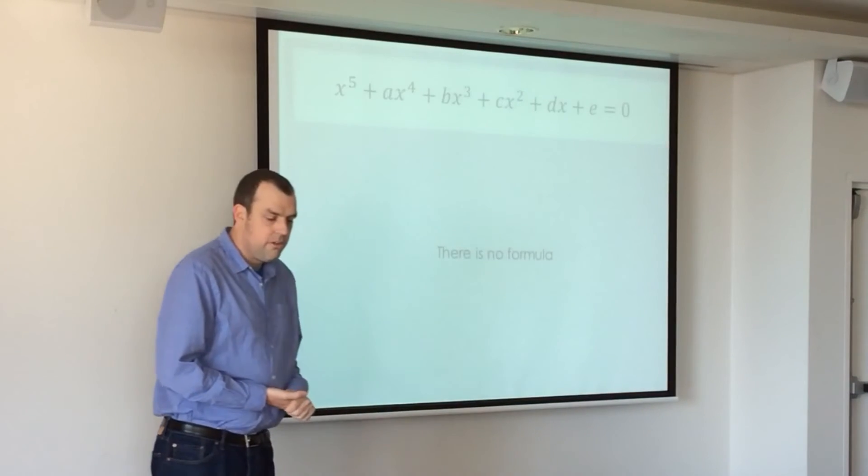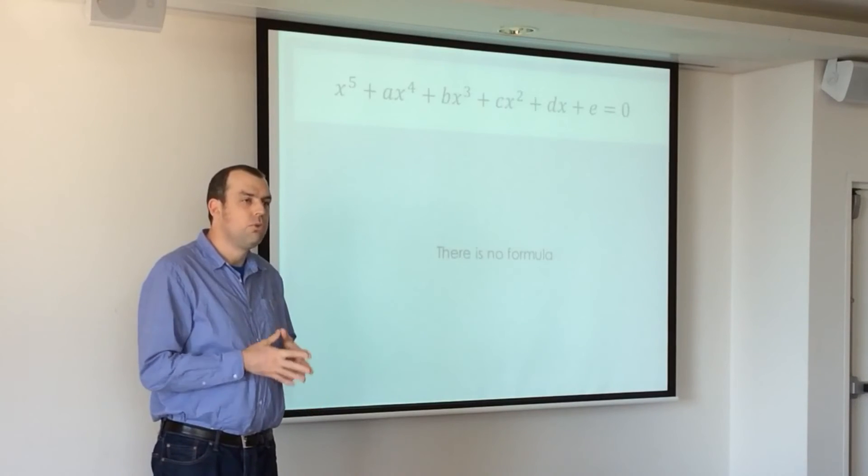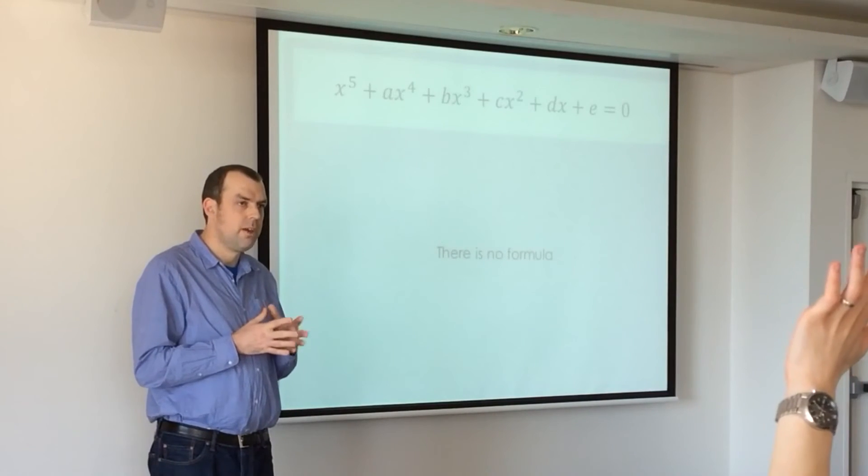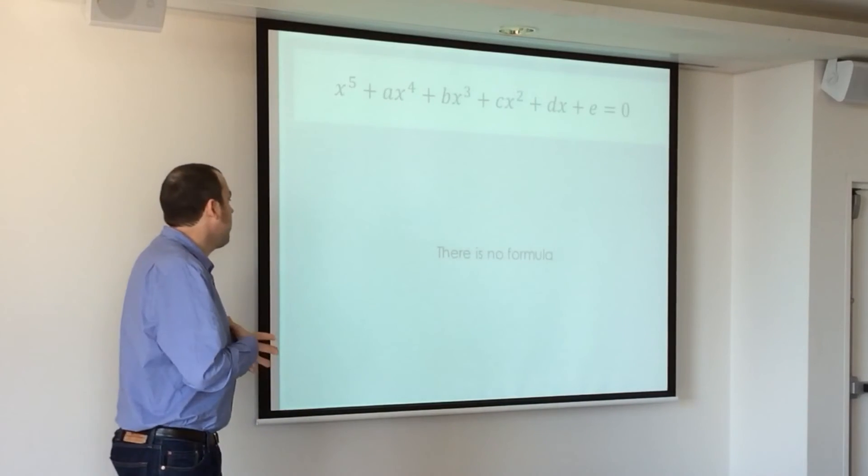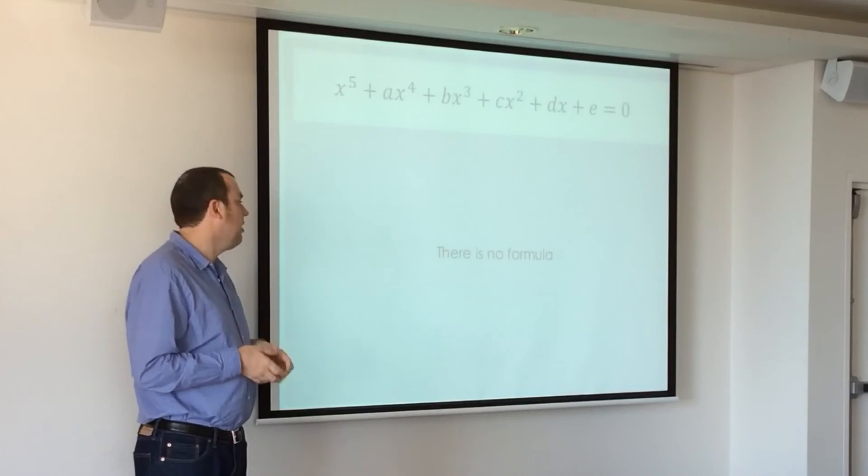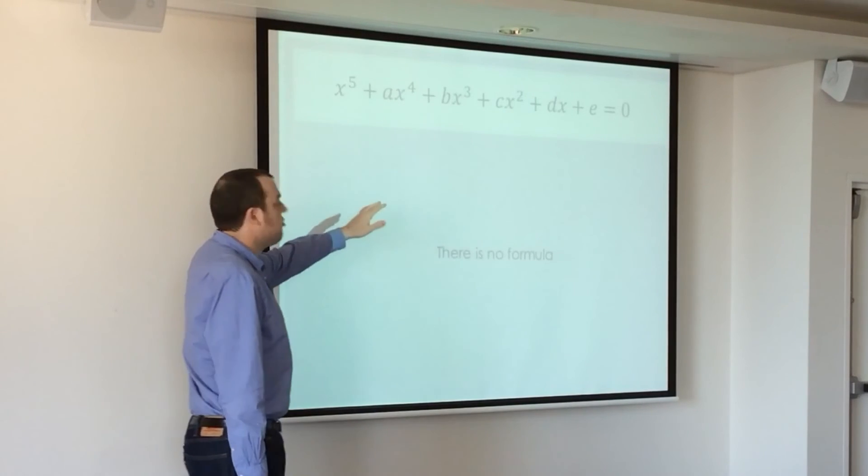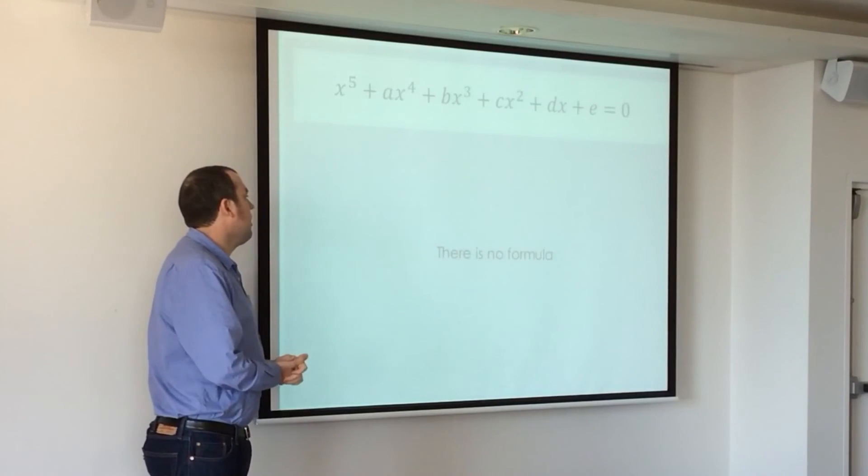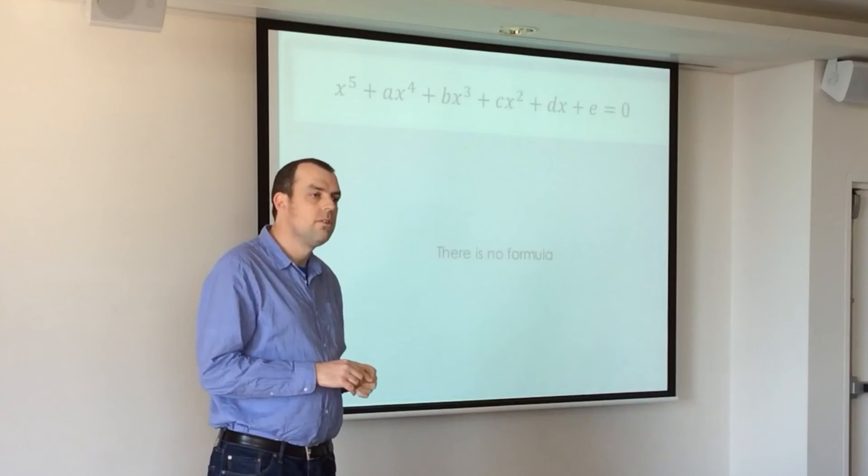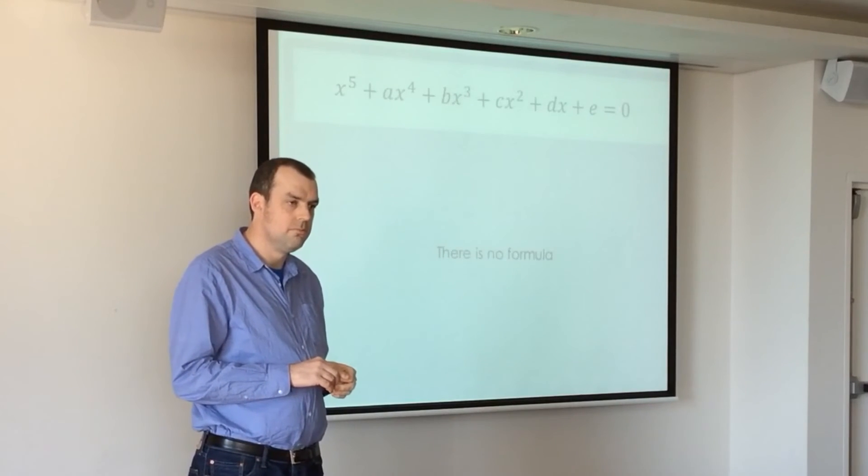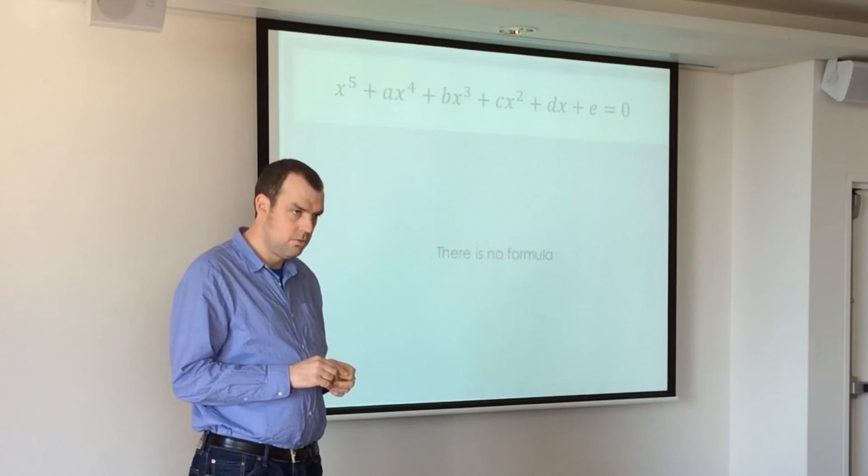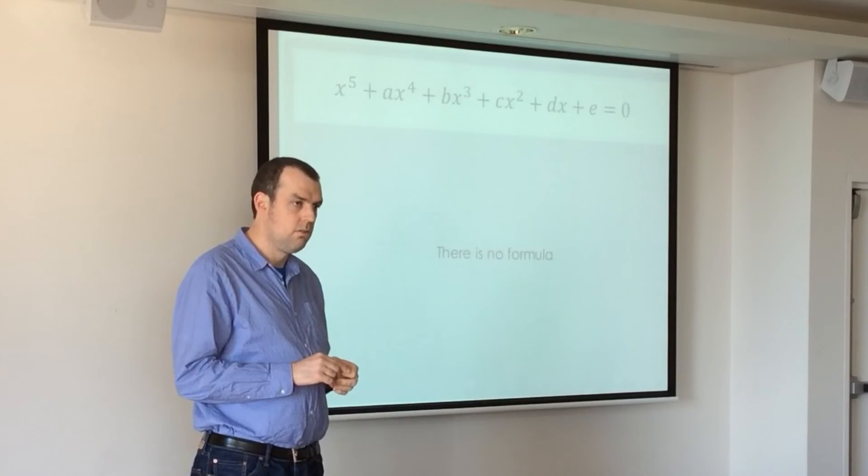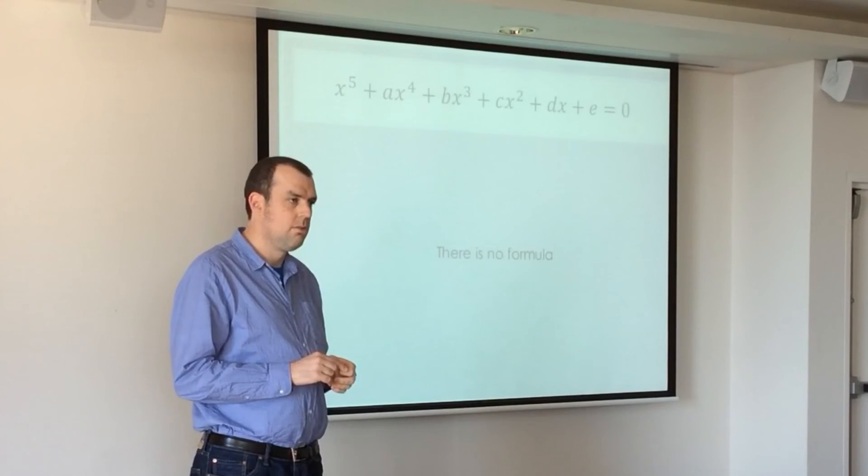And then, quintic - there is no formula. Now, how many people knew that? Okay, about half. So there is no way to write down a general solution for that equation. And I've known - oh yes, I was going to ask, do you know why Gauss couldn't find a solution for the quintic equation? Yes. Because he wasn't Abel.